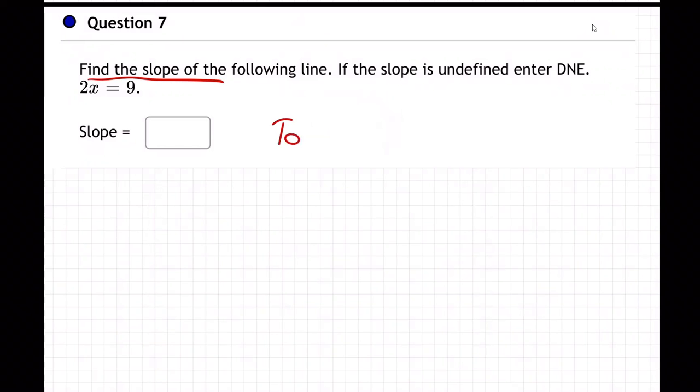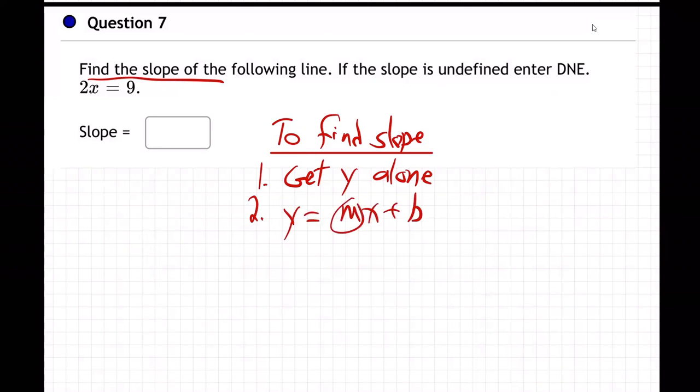To find the slope: Step number one, get y alone. And step number two, y = mx + b. The slope is right there.